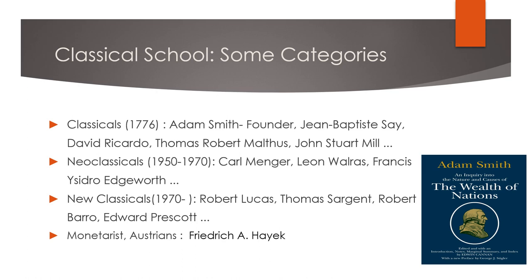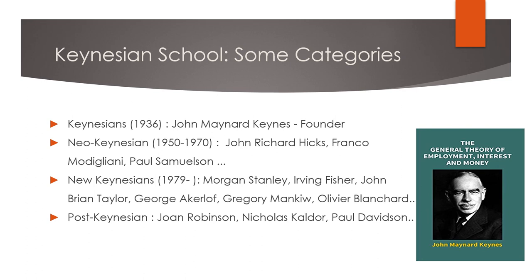Now let's speak about the Keynesian School. The Keynesian School was founded in 1936 by John Maynard Keynes. We later find the Neo-Keynesians, from 1950 to 1970 — John Hicks and Franco Modigliani are some economists. The New Keynesians, from 1929 to today, include Morgan Stanley, Irving Fisher, and John Brian Taylor.